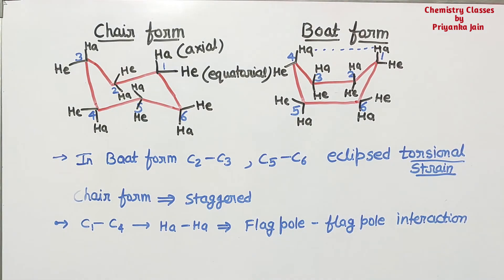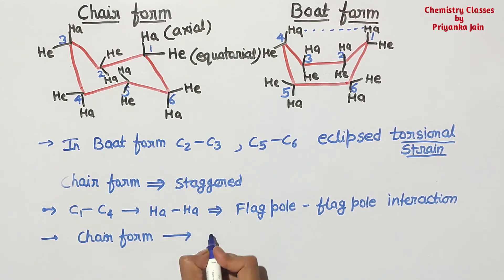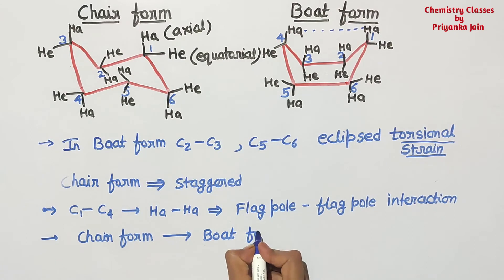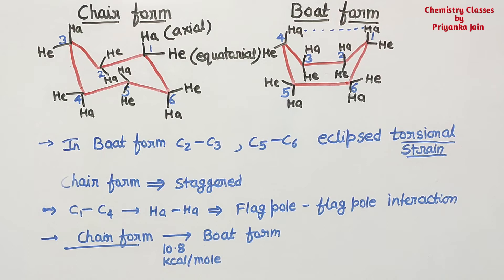Due to this, the boat form is less stable as compared to the chair form. The chair form is more stable than the boat form. One thing to note: the chair form is rigid while the boat form is flexible. We can convert chair form to boat form, but there is an energy barrier — energy is required for this conversion.